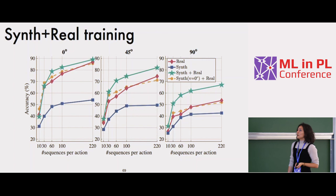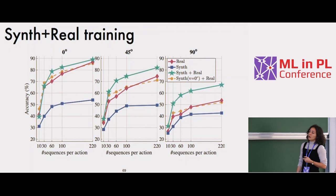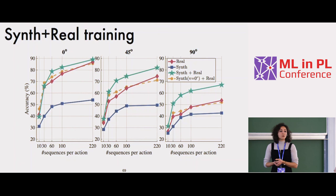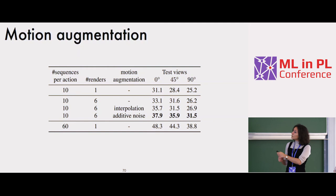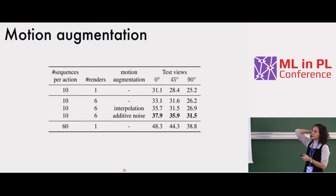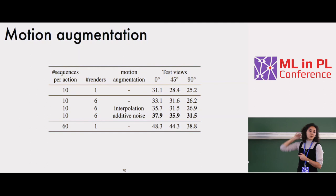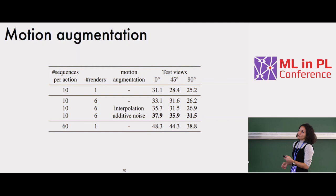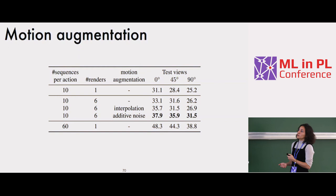Even training only on synthetic reaches about 50% performance, and surprisingly these unrealistic videos can already generalize to real videos. We also study motion diversity: going from 10 to 60 sequences per action gives a big jump of about 10-15%. To isolate whether this is from more data or more motions, we rendered 10 sequences six times — same data volume with more viewpoint, clothes, and light diversity — but performance only improved marginally by 2%. This confirms that motion diversity itself is what matters.